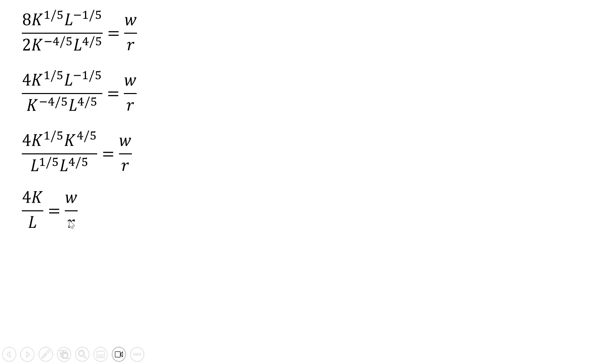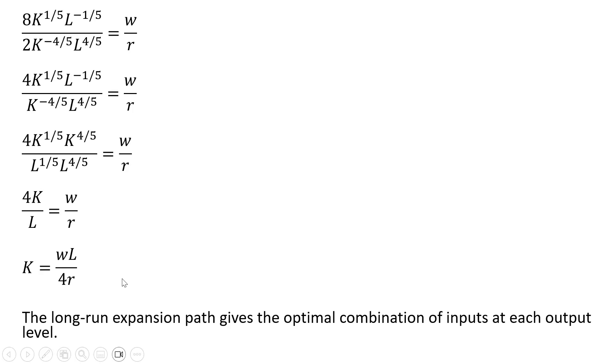And now dividing through by 4, going to divide both sides through by 4, and going to multiply everything through by L. And we have our long-run expansion path, which gives the optimal combination of inputs at each output level. Okay, that's it.